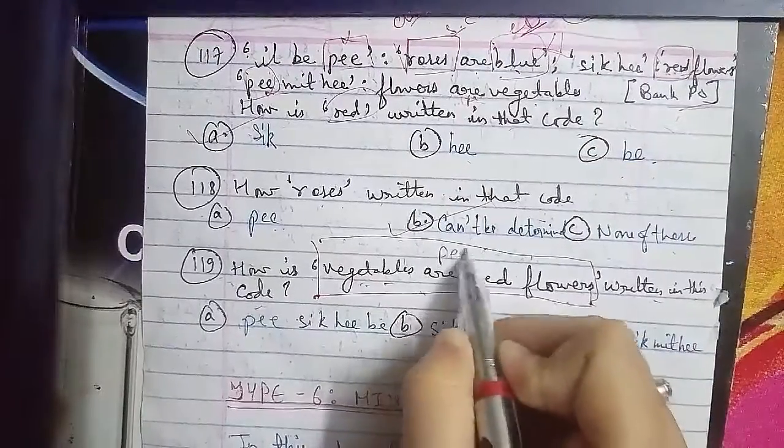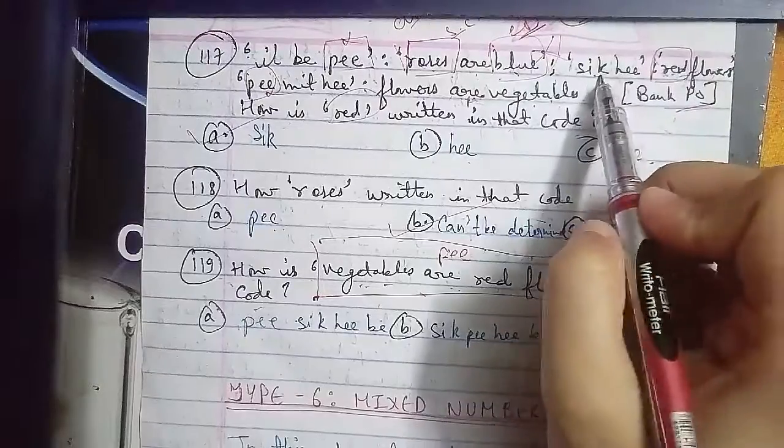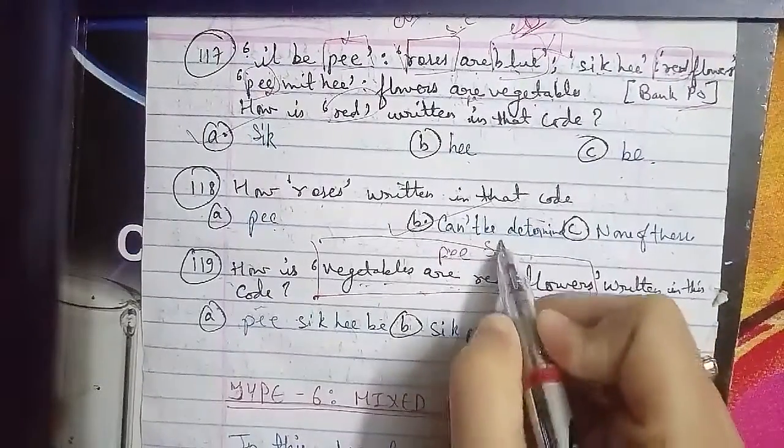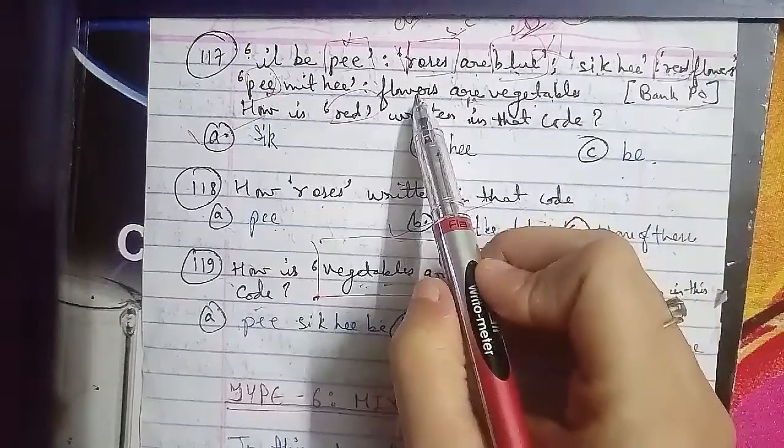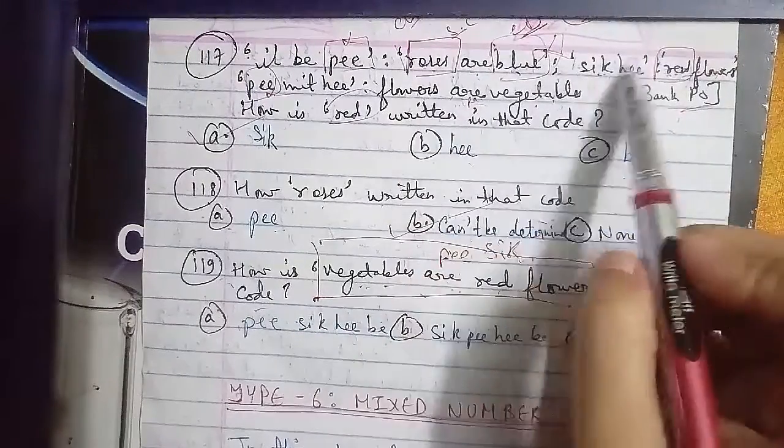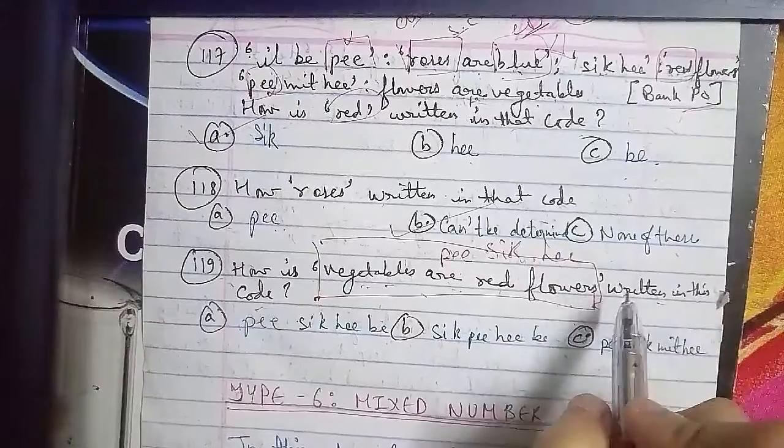Now for flowers: flowers is coded as he. So we get vegetables, flowers are vegetables, which is p mit he for flowers and are, and the remaining is mid, which is vegetables.